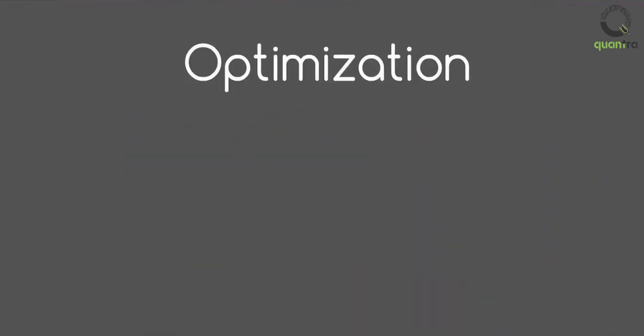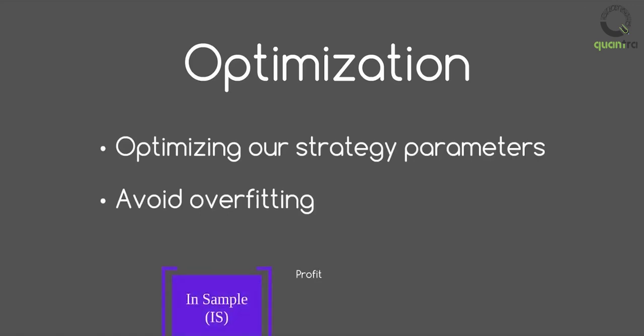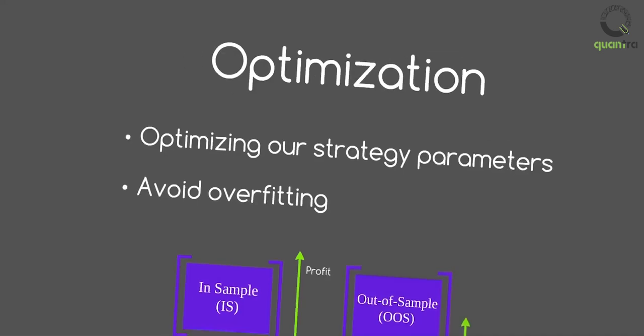Using backtesting, you can develop strategies that would have performed well in the past by optimizing strategy parameters. Also, overfitting needs to be avoided. Overfitting causes strategies to perform well in the in-sample data but not in out-of-sample data.